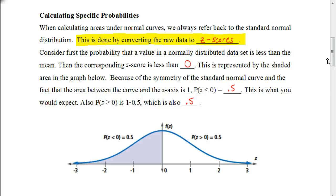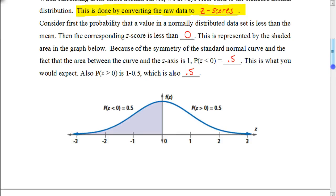To calculate specific probabilities, we're going to convert the information to z-scores — and in this lesson, that's already done for us. It's important to review this idea: everything to the left of zero has a probability of 0.5, meaning 50% of the data would be to the left of your mean, and 50% would be to the right of your mean. That's review from what we talked about in the previous video.